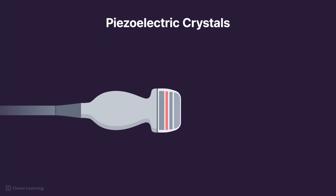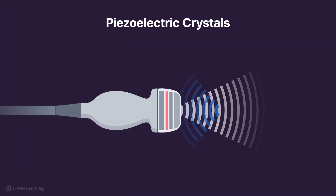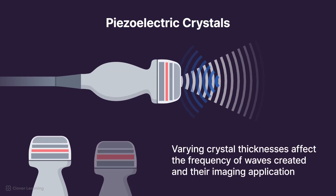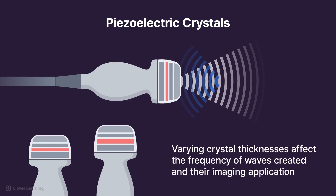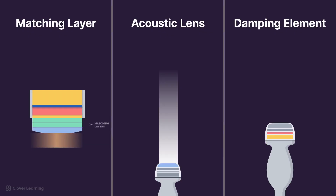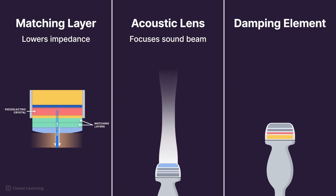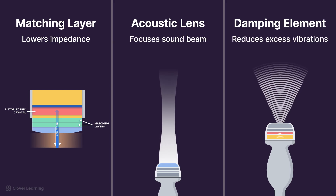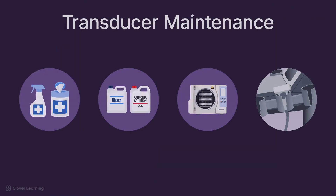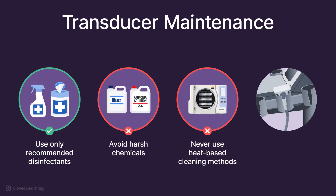The piezoelectric crystal generates and receives sound waves and comes in varying thicknesses which affects the frequency of waves created and their imaging application. The matching layer lowers impedance between the crystal and the patient's tissue. The acoustic lens focuses the sound beam and the damping element sharpens image clarity by reducing excess vibrations. Proper cleaning, storage, and damage prevention are essential for ensuring reliable imaging and patient safety.